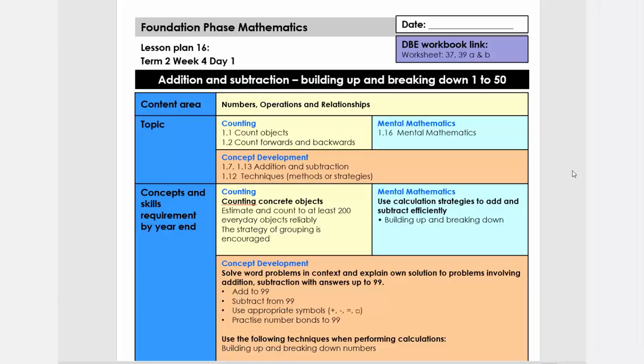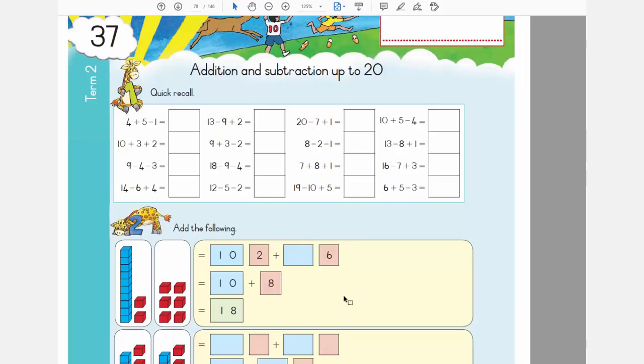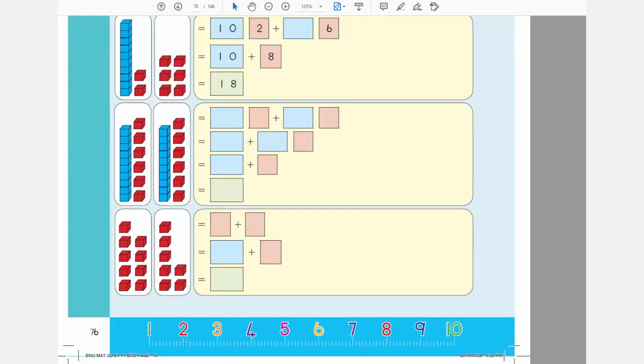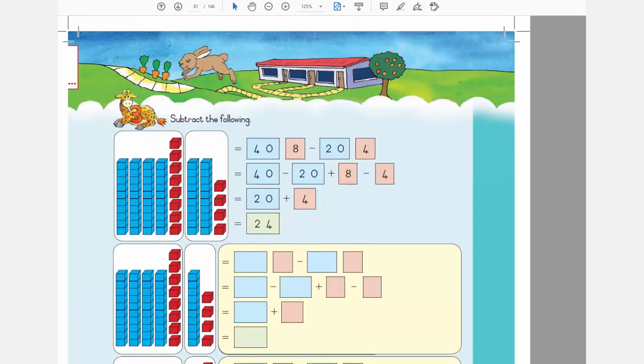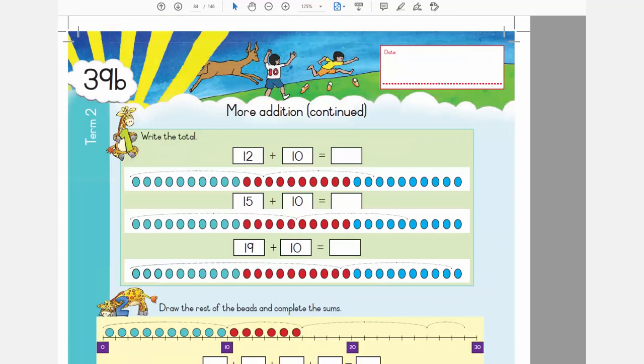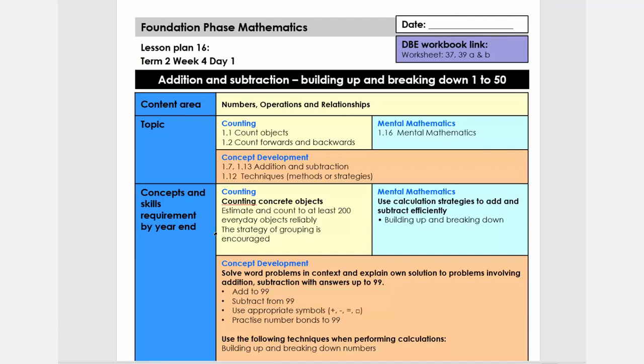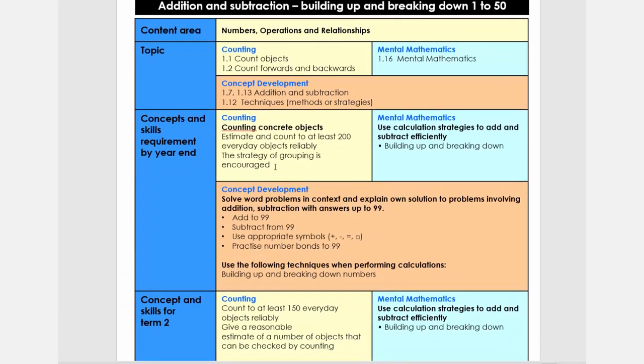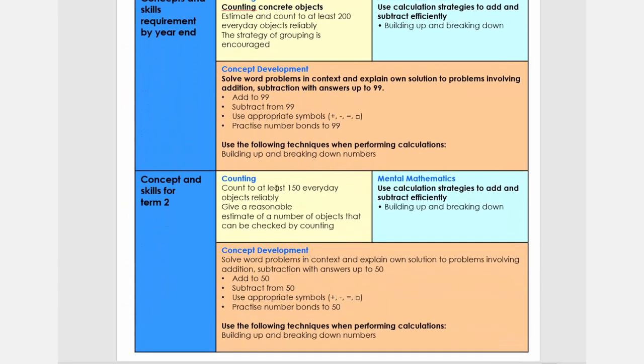Good day. Today we're going to do lesson plan 16, term 2, grade 2. The topic is addition and subtraction, building up and breaking down 1 to 50. It also links to worksheet 37 and 39 in the DBE book. Then we have your link to the CAPS, so you can pause and have a look at it.